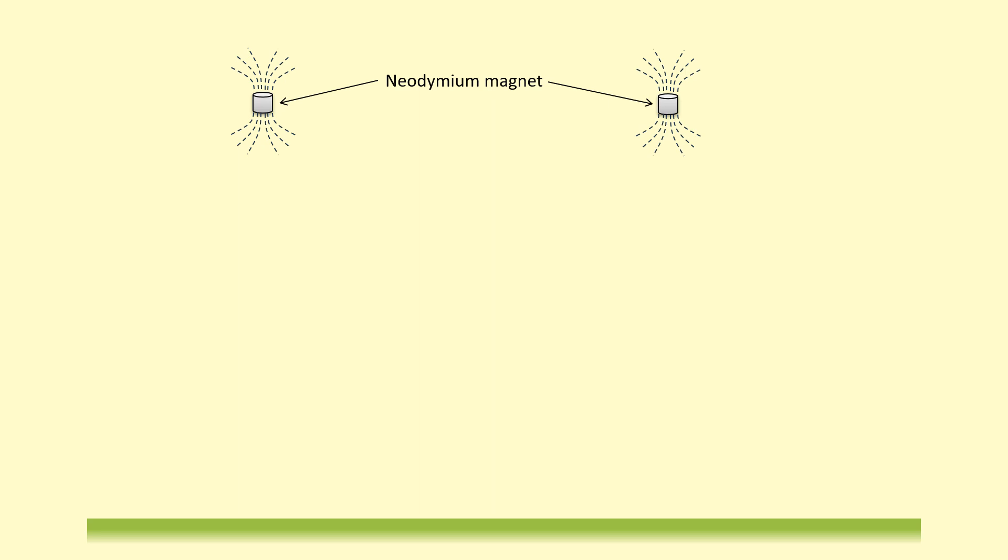Now I've got some neodymium magnets. They're basically very small, lightweight but fairly strong magnets. And I've got a hollow plastic tube here and I've got a hollow metal tube over here. I'm going to release these magnets and let's see what happens.